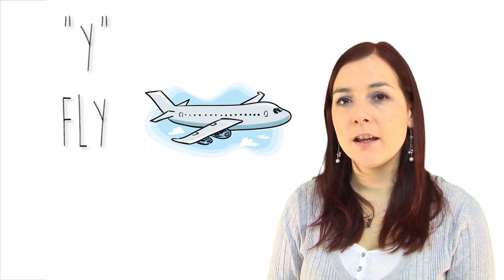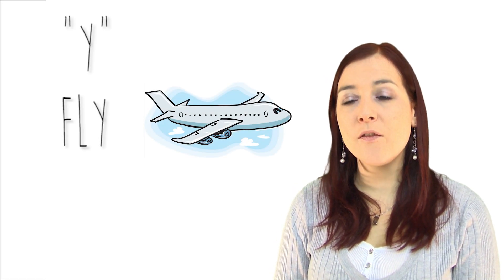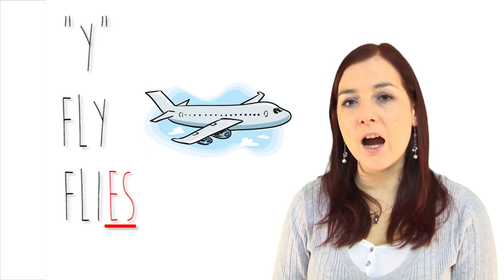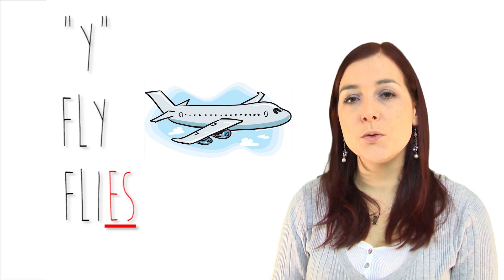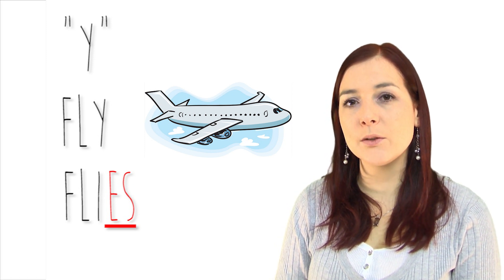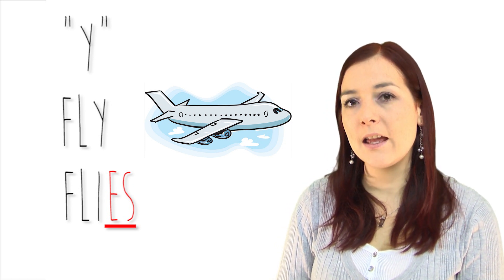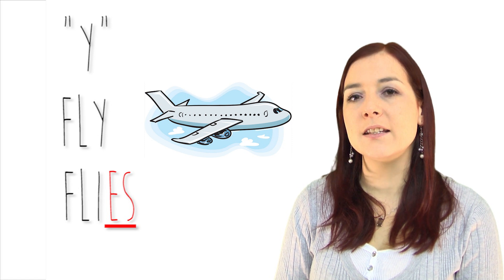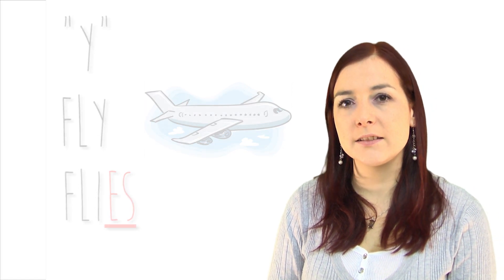Also, if your verb ends with 'y' — for example, 'fly' — you would spell 'flies' as f-l-i-e-s. So you take away the 'y' and replace it with 'i' and then add 'e-s'.